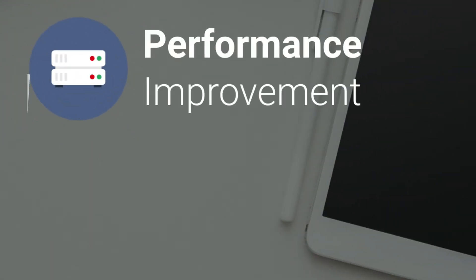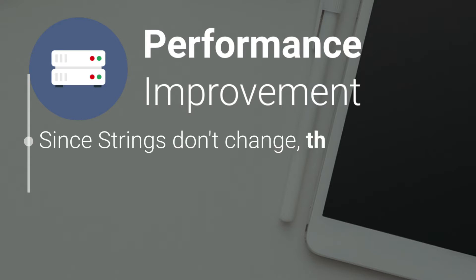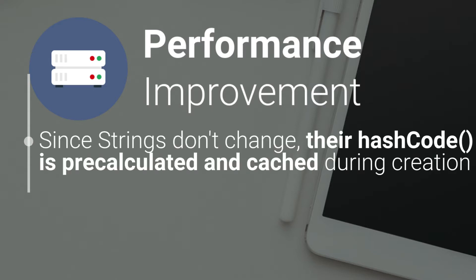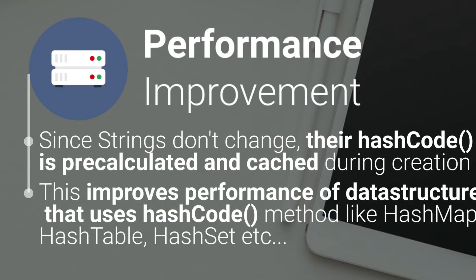Fourth, performance. The immutability guarantees strings that their value won't change. So the hash code method is overridden in the string class to facilitate caching, such that the hash is calculated and cached during the first hash code call and the same value is returned ever since. This, in turn, improves the performance of collections that use hash implementations like HashMap, Hashtable, and HashSet when operated with string objects.